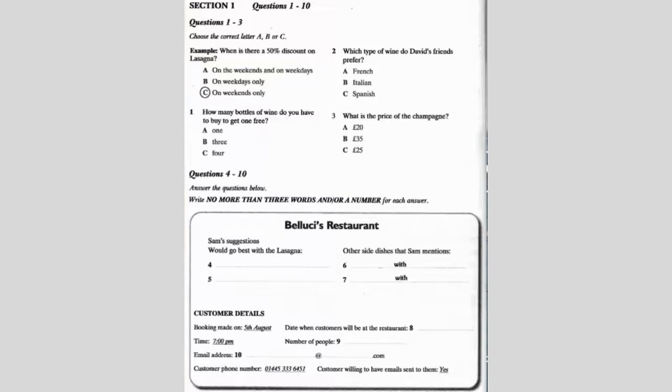We normally serve French as the house wine, but we will be able to find a nice Italian one instead if you prefer. That would be great. What about champagne? We will probably order at least two really good bottles. How much would a good bottle cost? Well, you're in luck because the champagne used to cost twenty-five pounds per bottle, but now it's only twenty pounds per bottle, so you'll save five pounds. Before you hear the rest of the conversation, you have some time to look at questions four to ten.